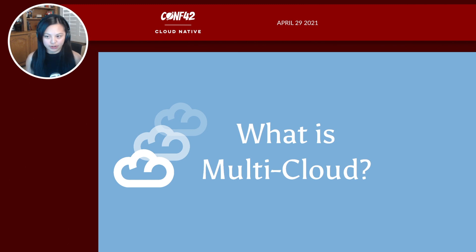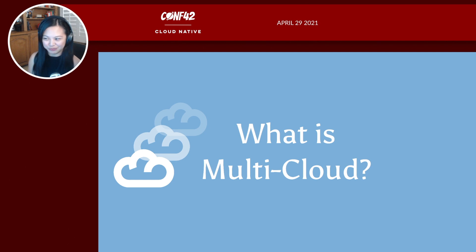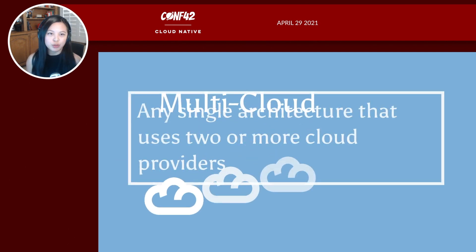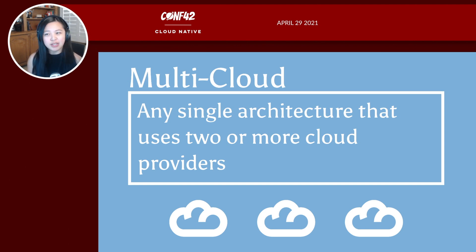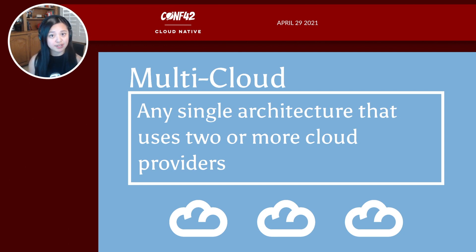So we'll start at the beginning: what is multi-cloud? For the context of this presentation, multi-cloud is any single architecture that uses two or more cloud providers. We're going to be focusing on the big three — AWS, GCP, and Azure.